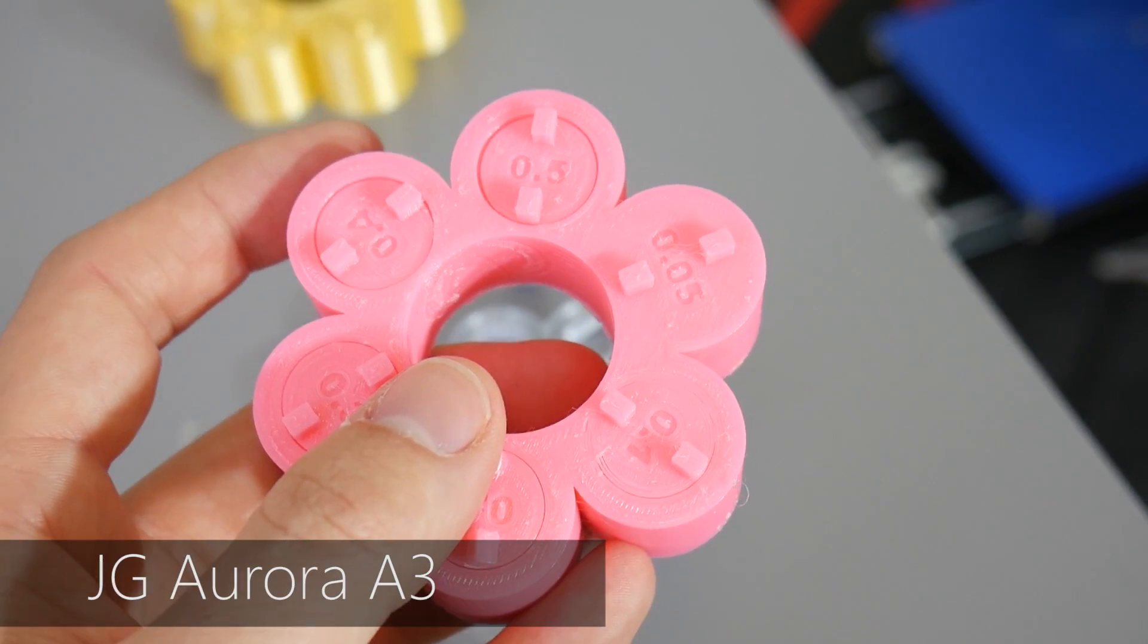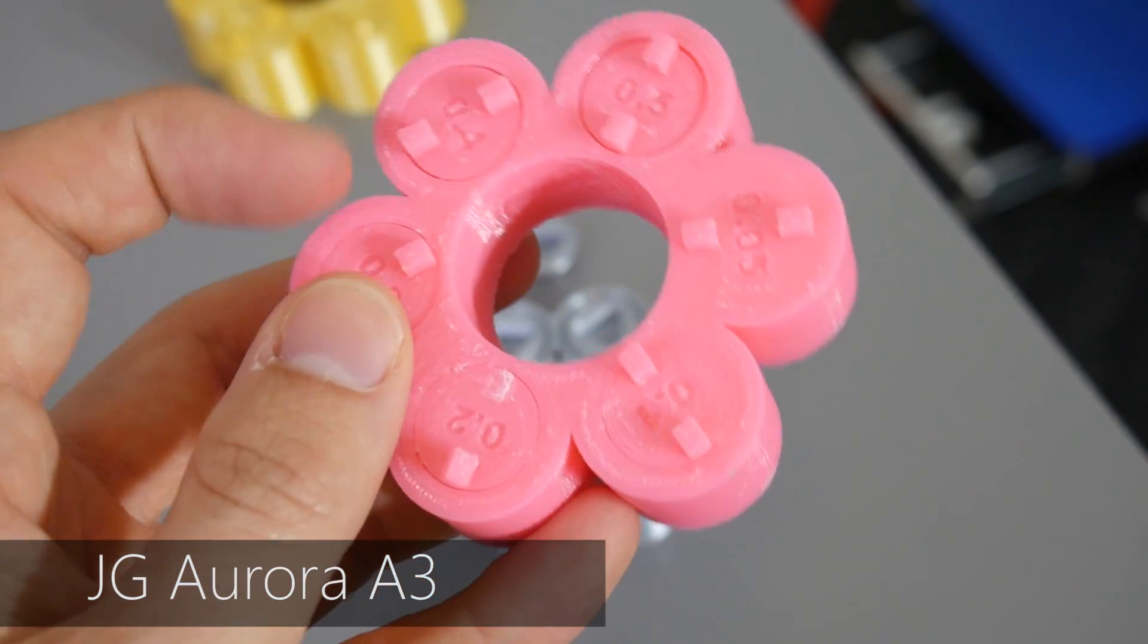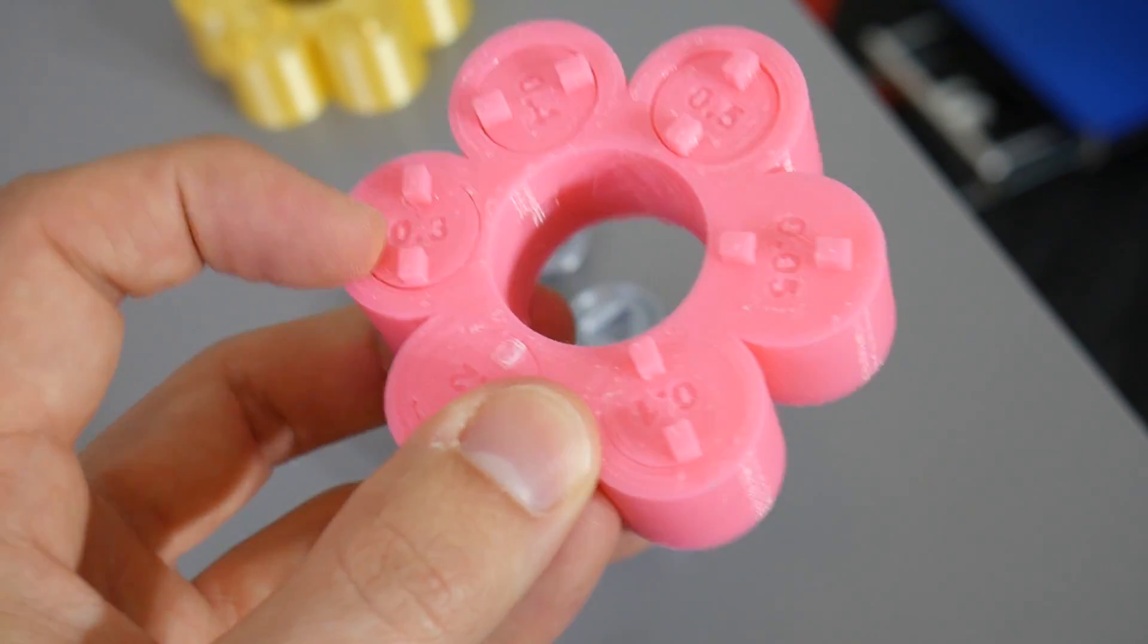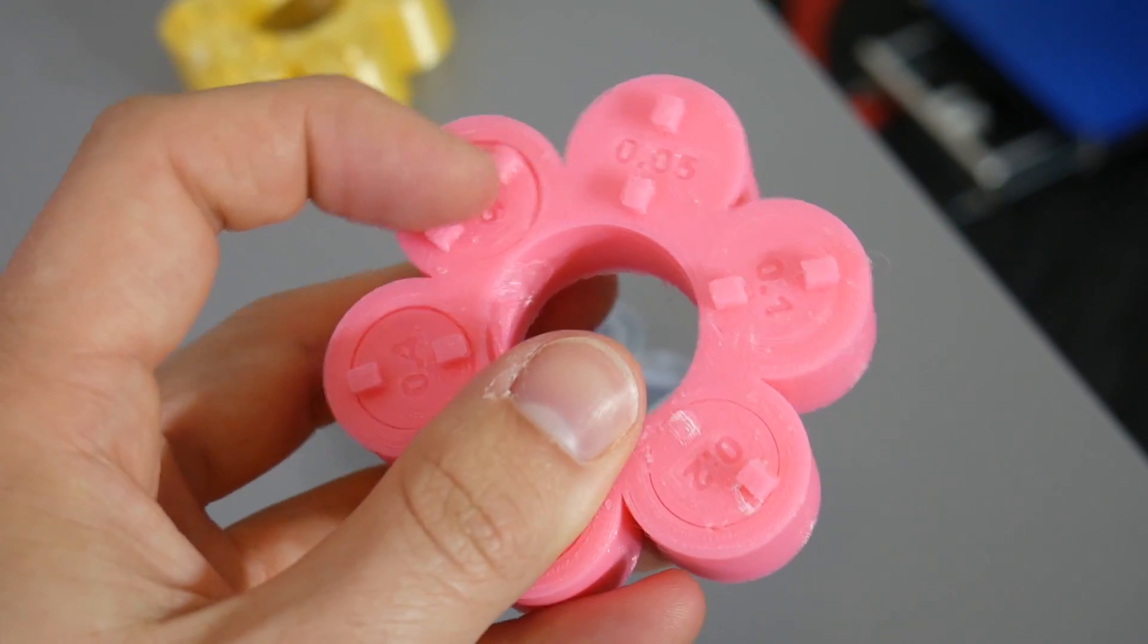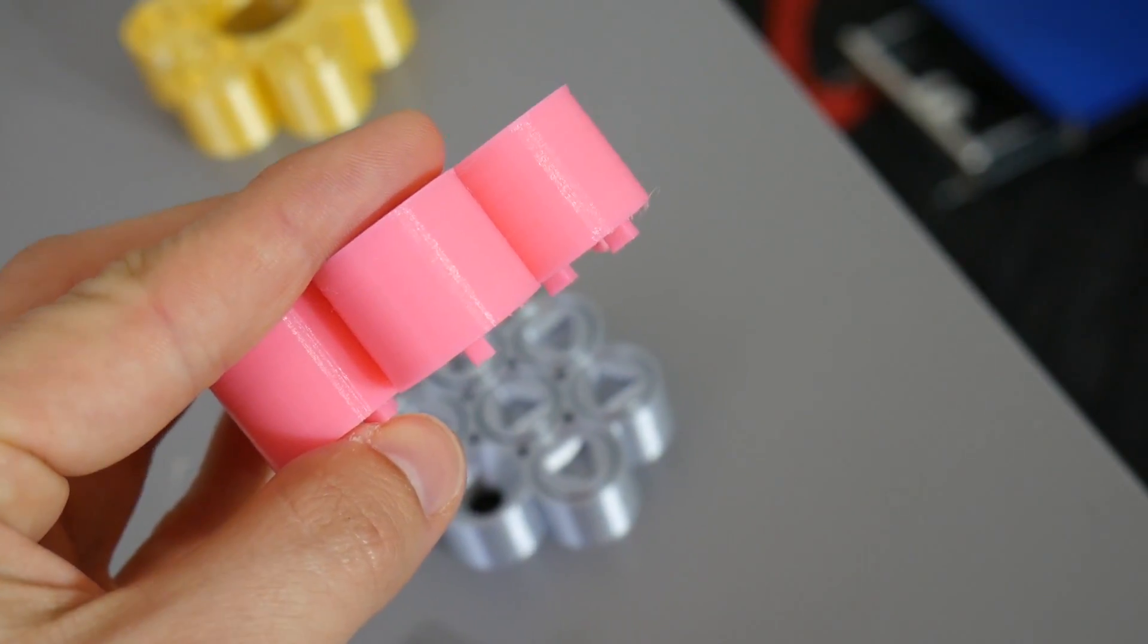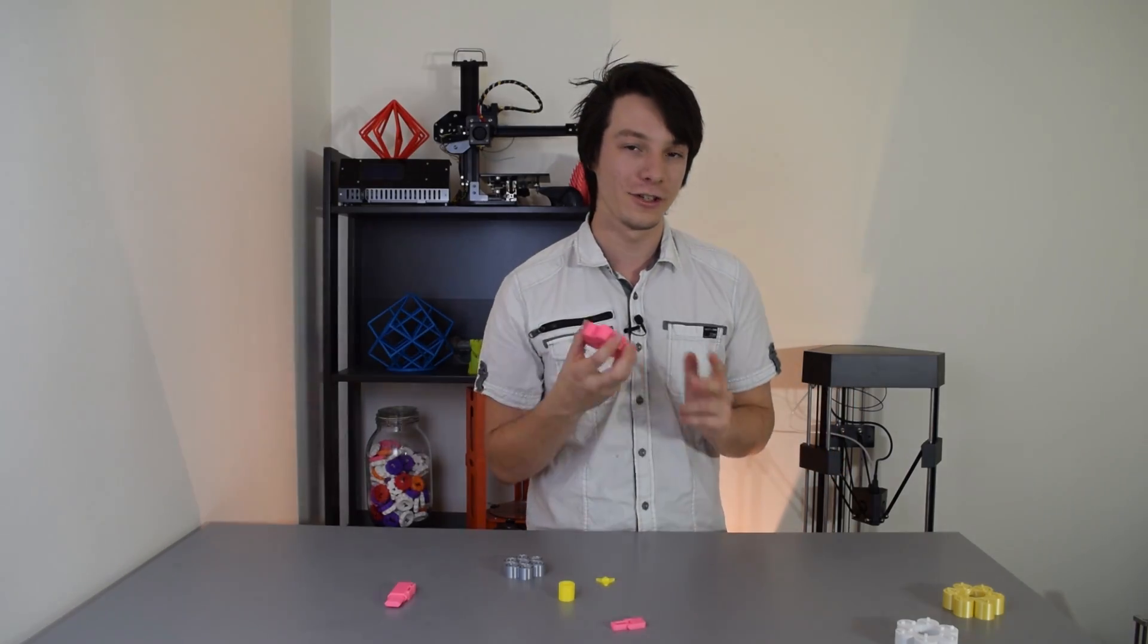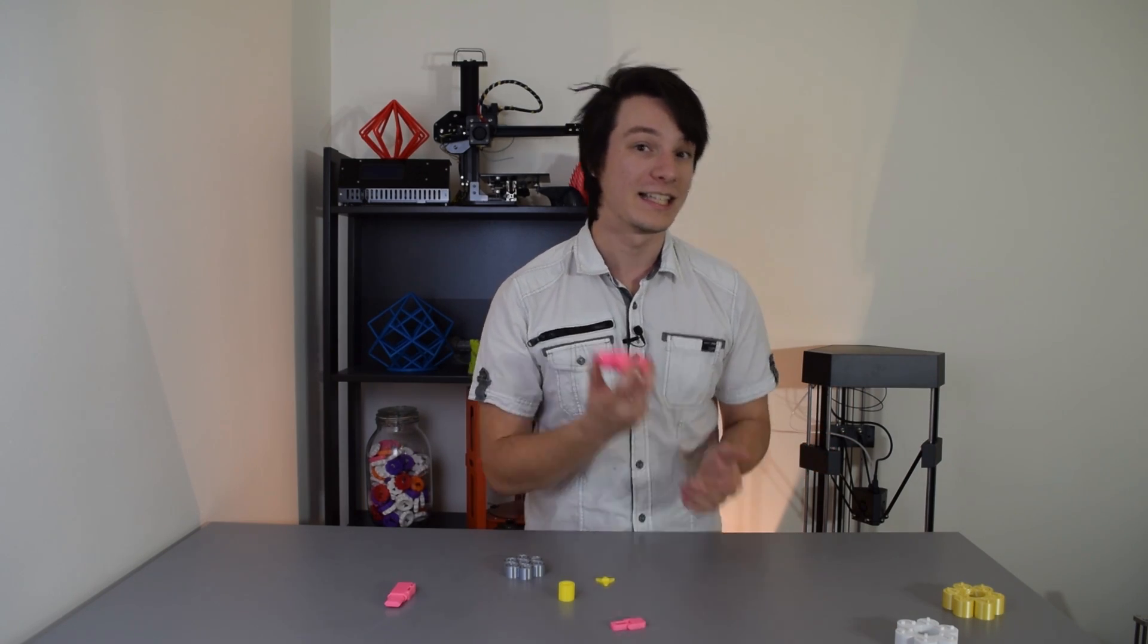This is one I printed on the JG Aurora. So the JG Aurora is kind of an in-between with the Prusa i3 Mark II and the result of the Flux Delta Plus. The JG Aurora got 0.3 and up to work. Whereas the Prusa i3 Mark II got 0.2 millimeter tolerances to work. So you can see already how this tolerance gauge is useful in determining what your 3D printer is capable of.